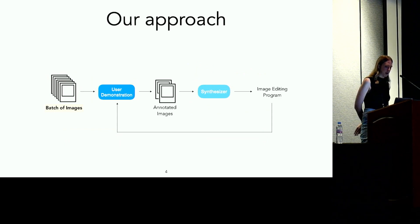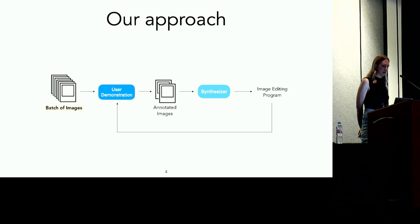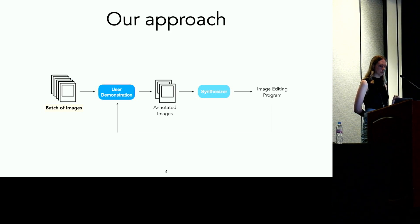To contend with this problem, we've developed an approach that combines the relative strengths of programmatic batch image processing and computer vision techniques. I'll give an overview of how this approach works by explaining how Alice can automate her task. First, Alice can perform a demonstration on a small subset of the images in her batch. In her case, this demonstration would involve finding just a couple of images where her daughter is playing violin, and annotating the objects in the images that are relevant to her task.